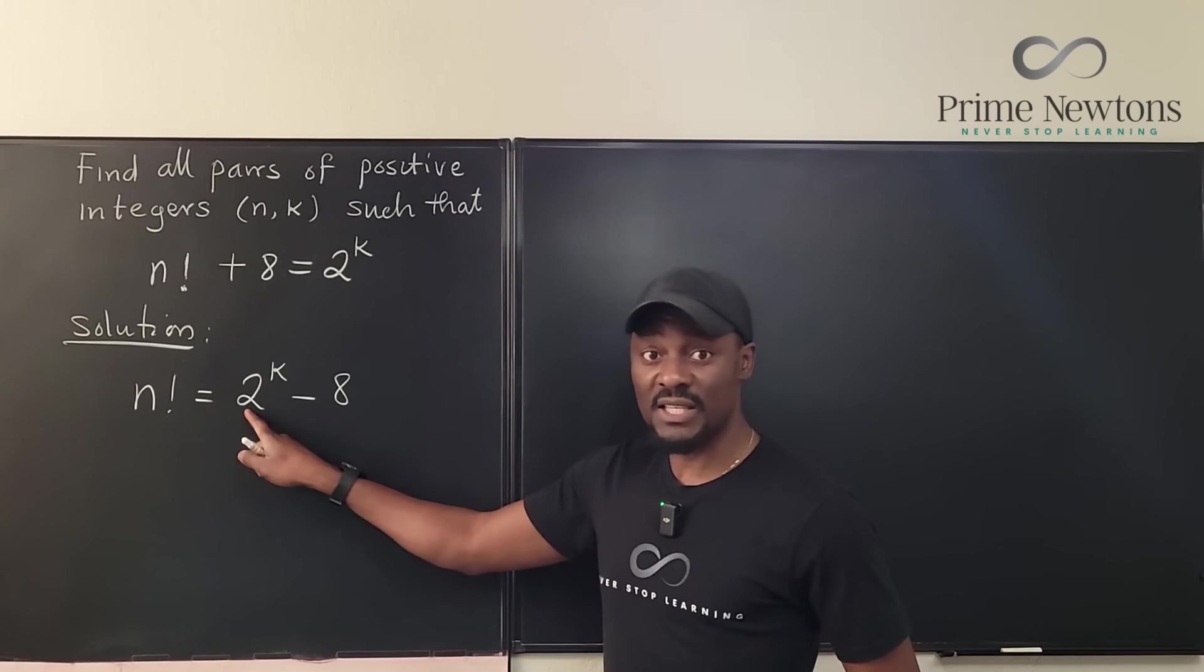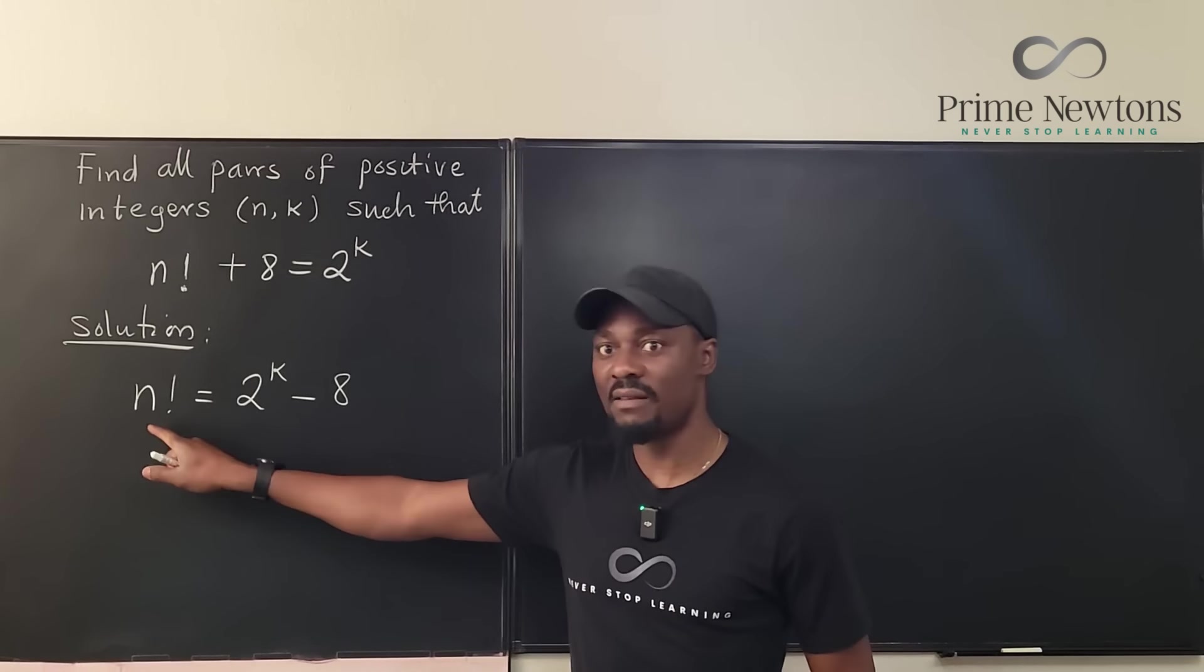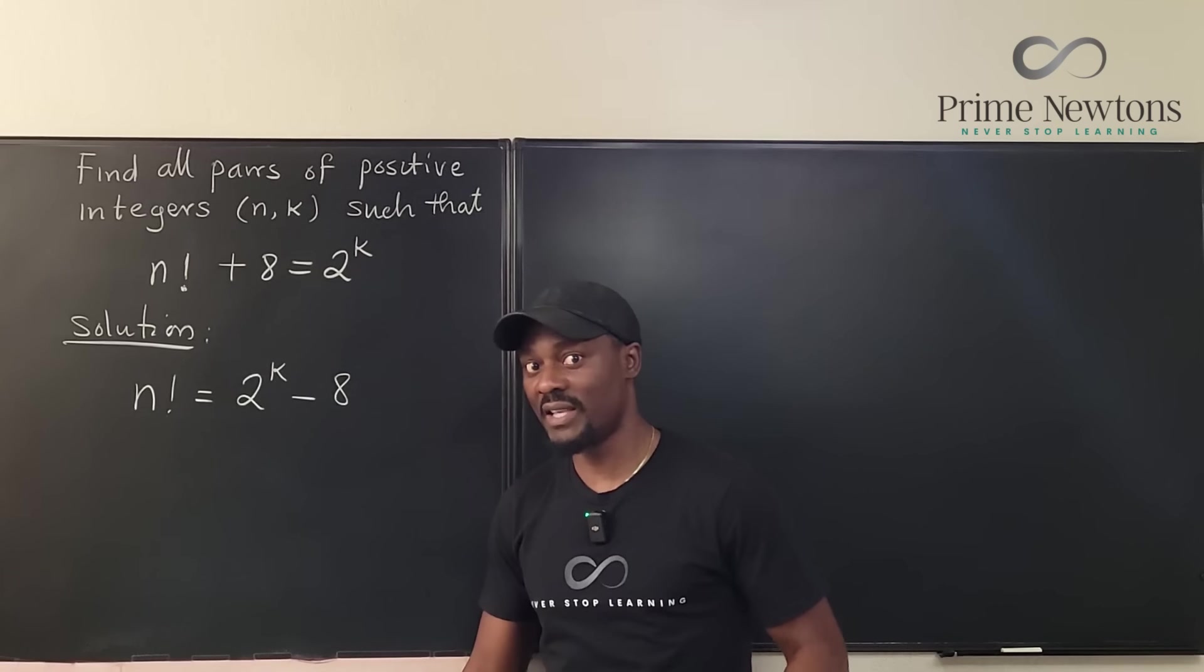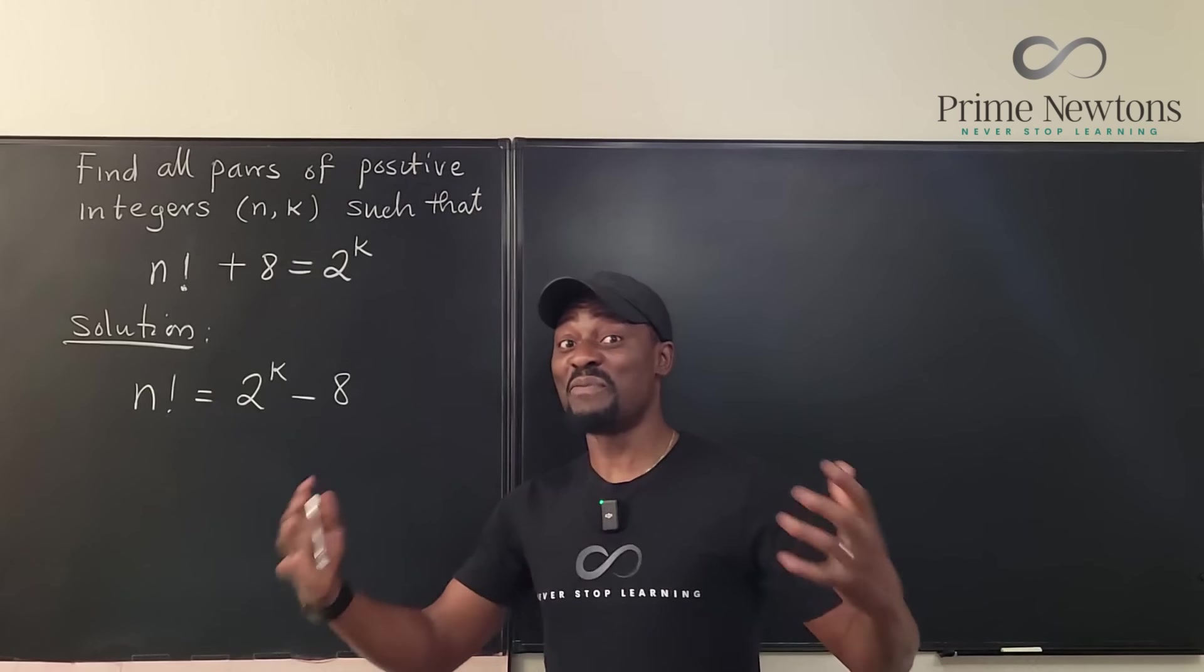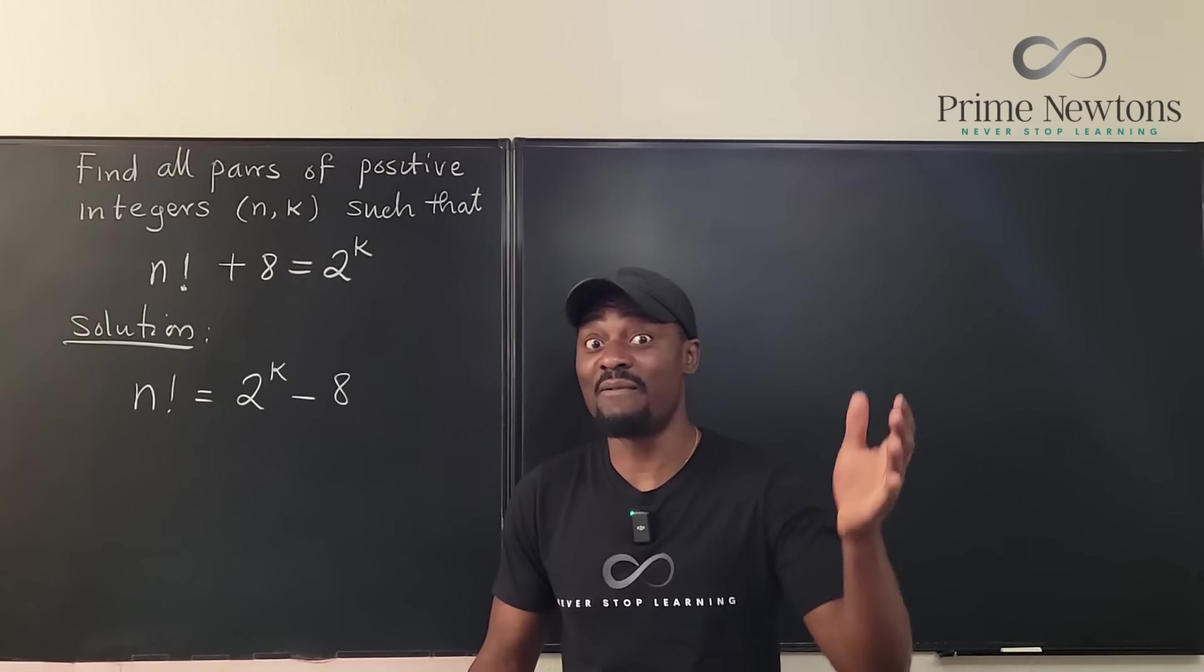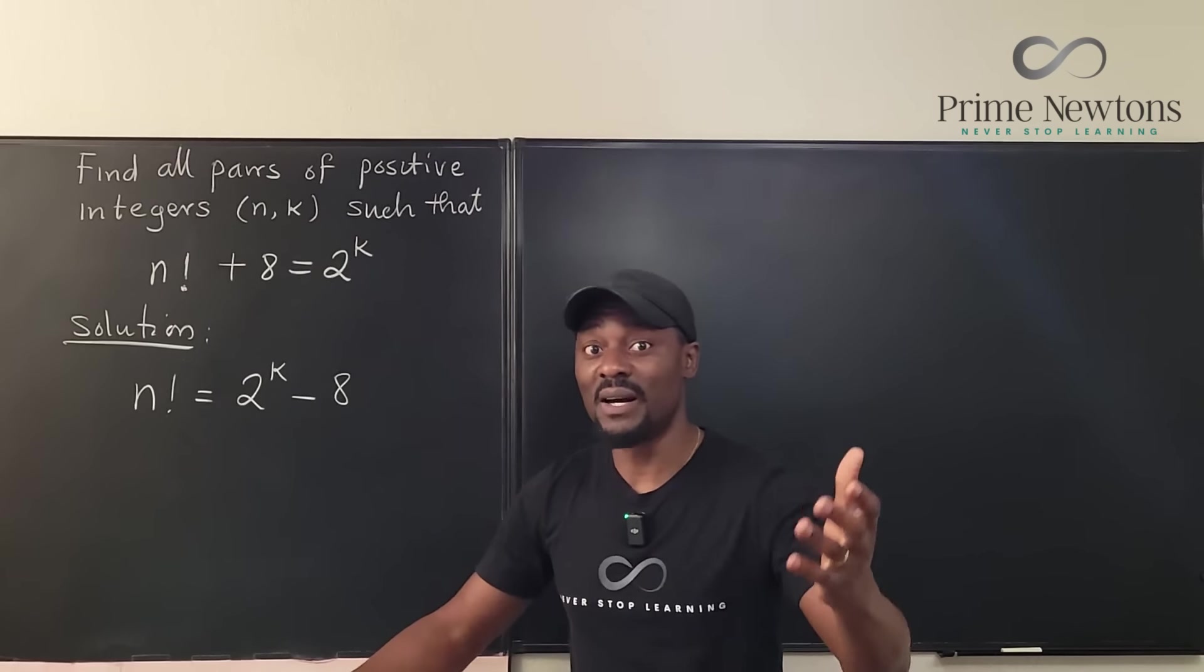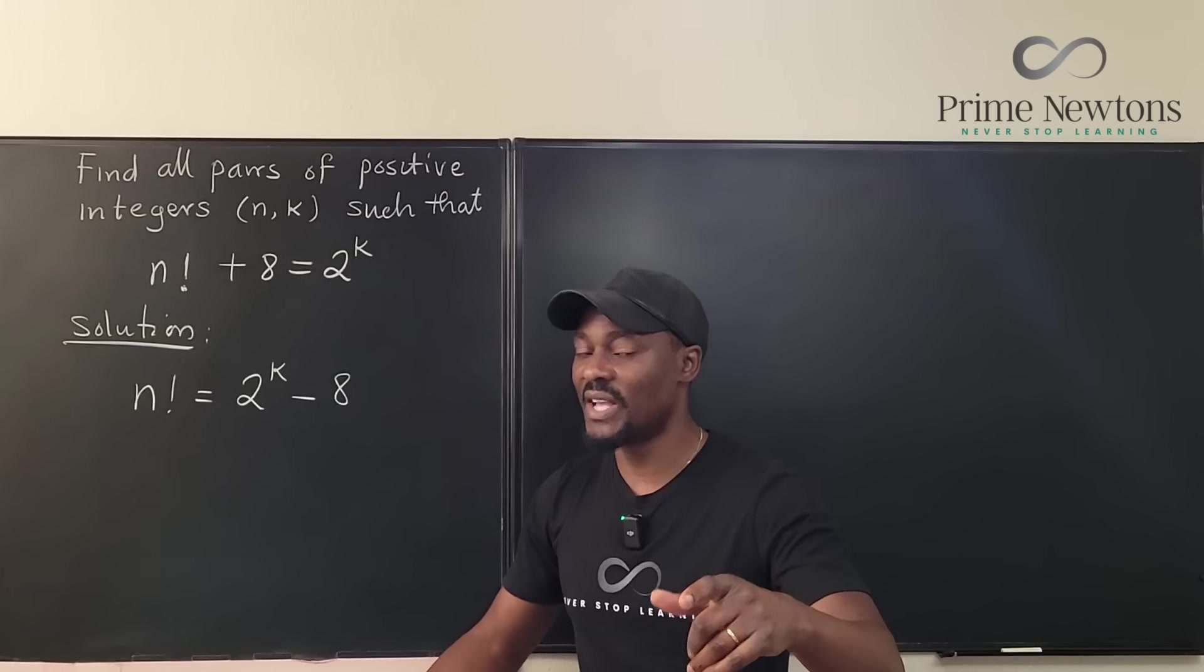So clearly I know because this is even and this is even, my n factorial has got to be an even number whatever I get. But that doesn't sound like some profound knowledge because every factorial is even.